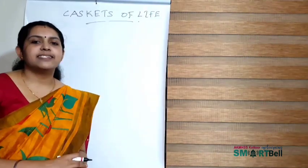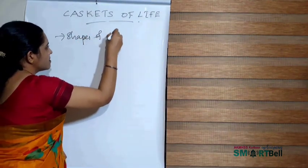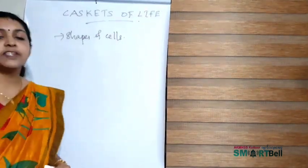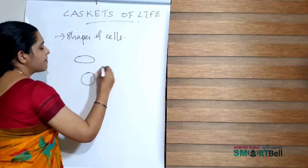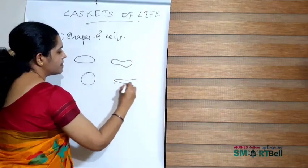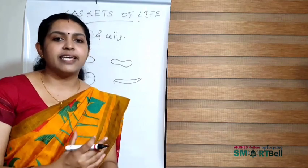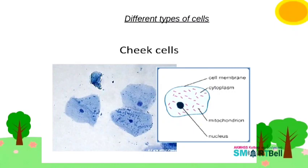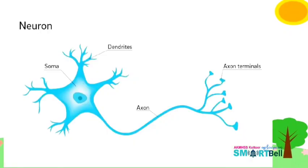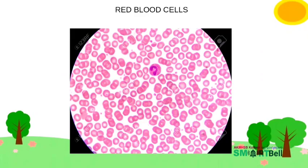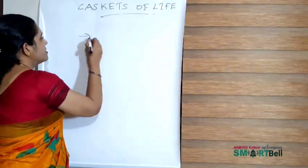Now let us discuss the shapes of cells. We can observe cells with different shapes — oval, round, and others. Examples of cells with different shapes in our body include the cheek cell, muscle cell, neuron, white blood cell, and red blood cell.